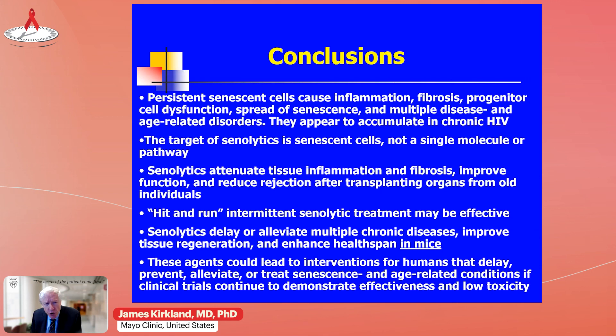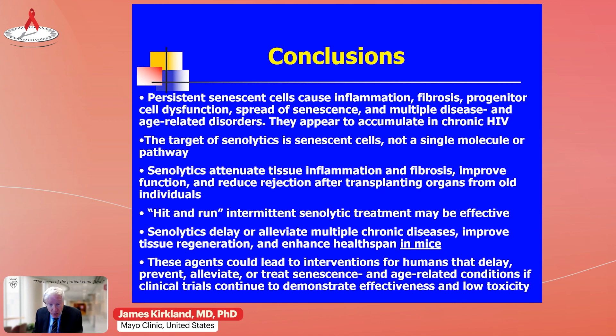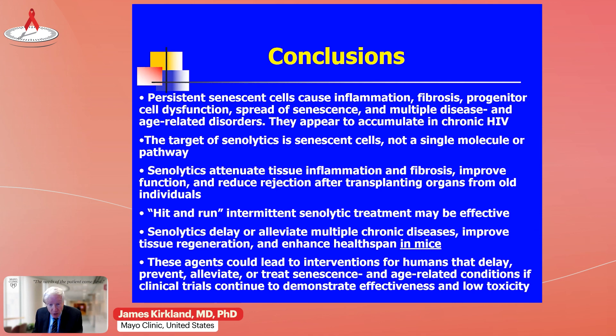In conclusion, persistent senescent cells appear to cause inflammation, fibrosis, regenerative cell dysfunction, and spread of senescence, and they appear to accumulate in chronic HIV. The target of senolytics is senescent cells — not a single molecule or pathway. We can give these drugs intermittently because it takes a week to six weeks for new senescent cells to form, and it looks like they attenuate tissue inflammation and fibrosis. A hit-and-run approach may be effective. They appear to delay, alleviate, prevent, or treat multiple chronic and acute diseases and disorders in mice, but we don't know if they work in humans yet. I would emphasize they should not be used in humans until we've done carefully controlled clinical trials — physicians should not be prescribing these agents and people shouldn't take them over the counter until we know if they work. Thank you very much.